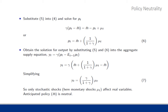Now let's read into that solution for output. Output is driven by the monetary shock only, and notice the absence of M-bar in the solution for output. This tells us that changes in the money supply will have no effect on equilibrium output, so we have policy neutrality.